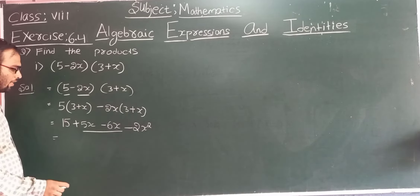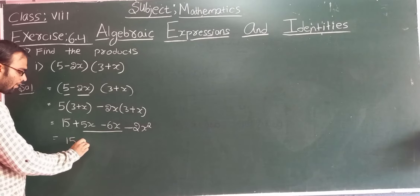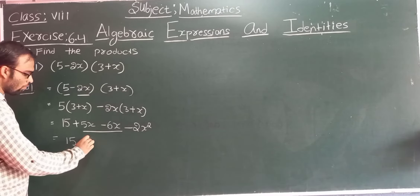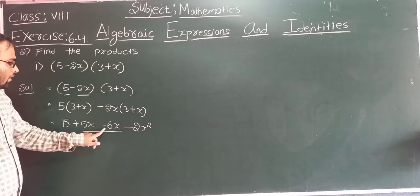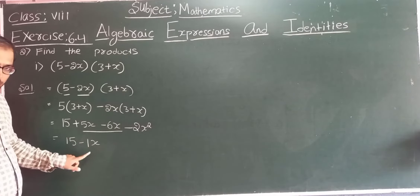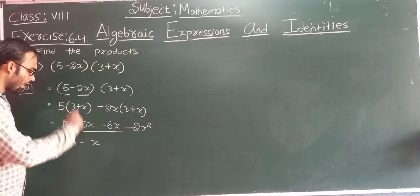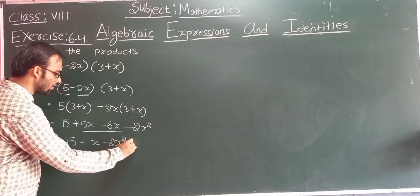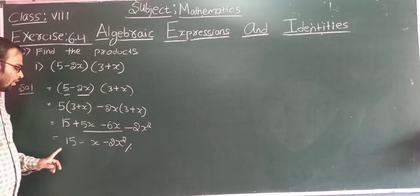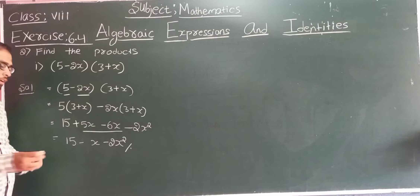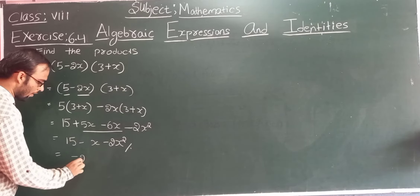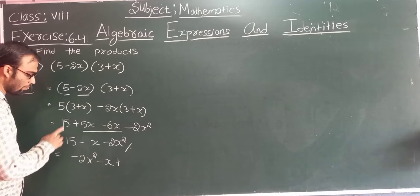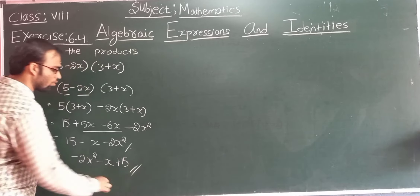Now we combine the like terms. We have 15, and then plus 5x minus 6x gives minus 1x, which we write as minus x. So the solution is 15 minus x minus 2x squared. You can also rewrite it in standard form as minus 2x squared minus x plus 15. This is the solution for the first problem.